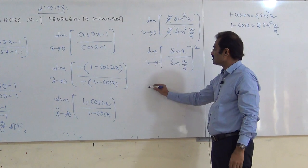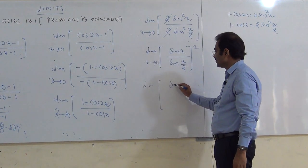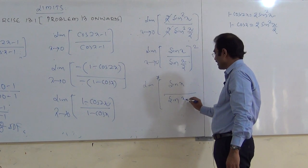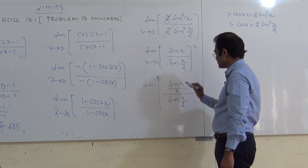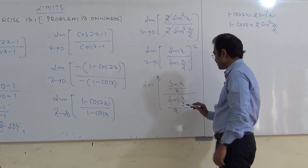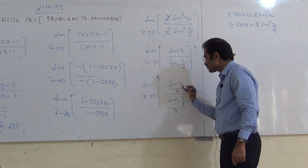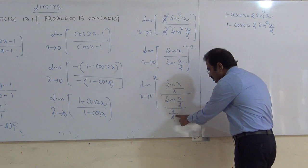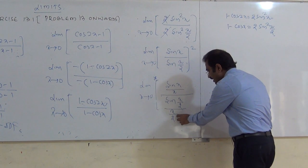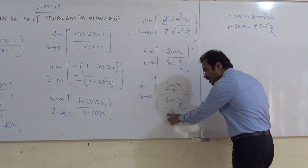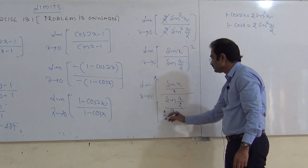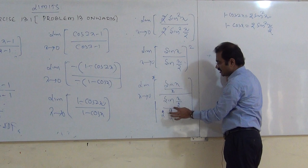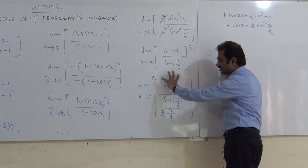To modify: divide numerator and denominator by x. For the sin(x/2) term, I need x/2, so I write x/2 and multiply and divide by 2 to balance. After simplification, x/x cancels and 2/2 cancels — we get the same expression back. This is the modification main step.